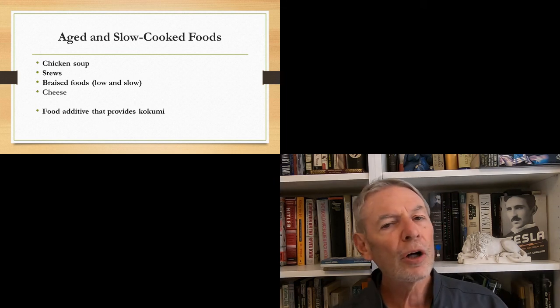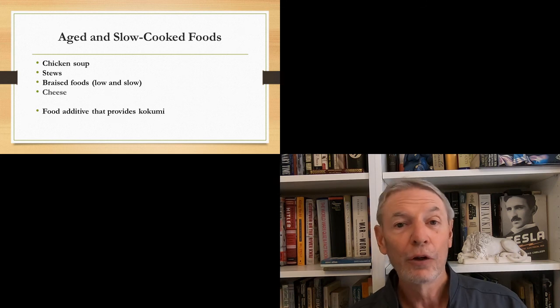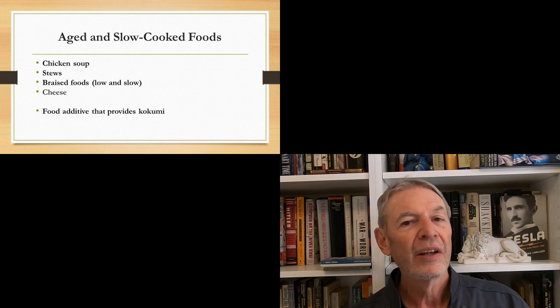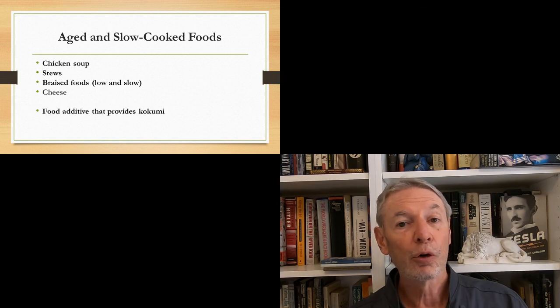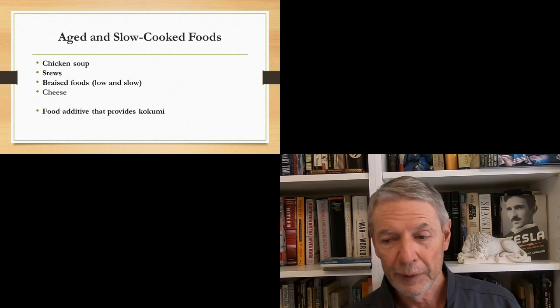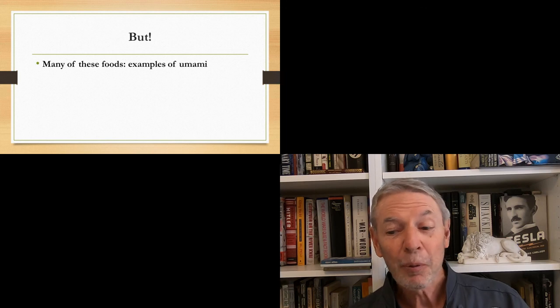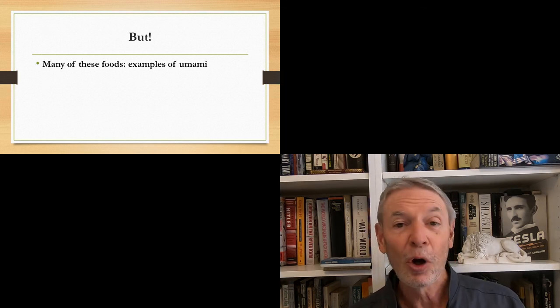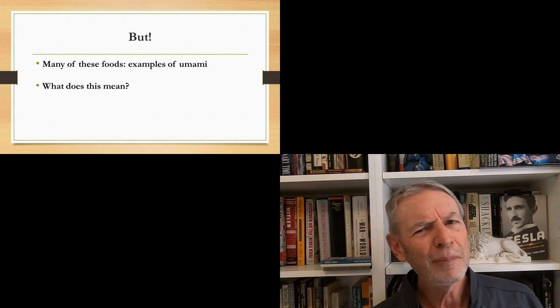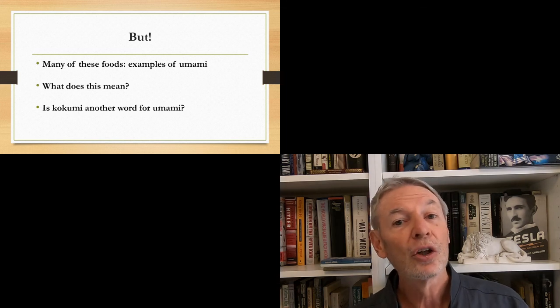Also there are companies that have created food additives that they say add kokumi to foods. Now this video is not about additives and it's not about the companies that make the additives. This is about naturally occurring kokumi, kokumi that occurs naturally in food. It's not about adding, but every now and then I will mention what an additive of kokumi would mean. Now there's a big but to everything I just showed you. The problem is that many of these foods, if not maybe all of them, are also often given as common examples of foods that have umami.